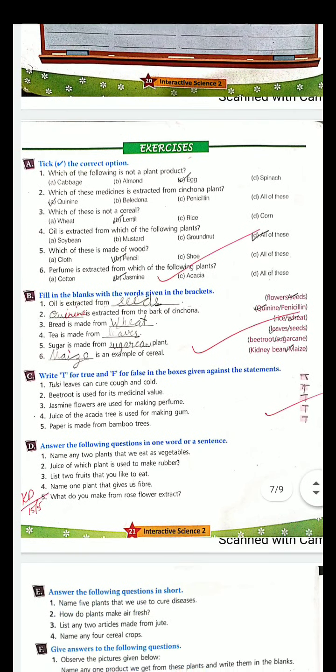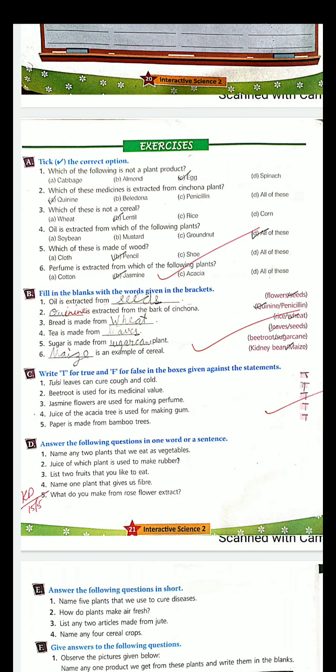Now let's start some of the exercises. I would like to tell you all that there are three exercises - tick the correct option, fill in the blanks, and true and false. So my lovely children will do fill in the blanks and true and false in the copy. Tick the correct option you can read from the book and understand from this video.